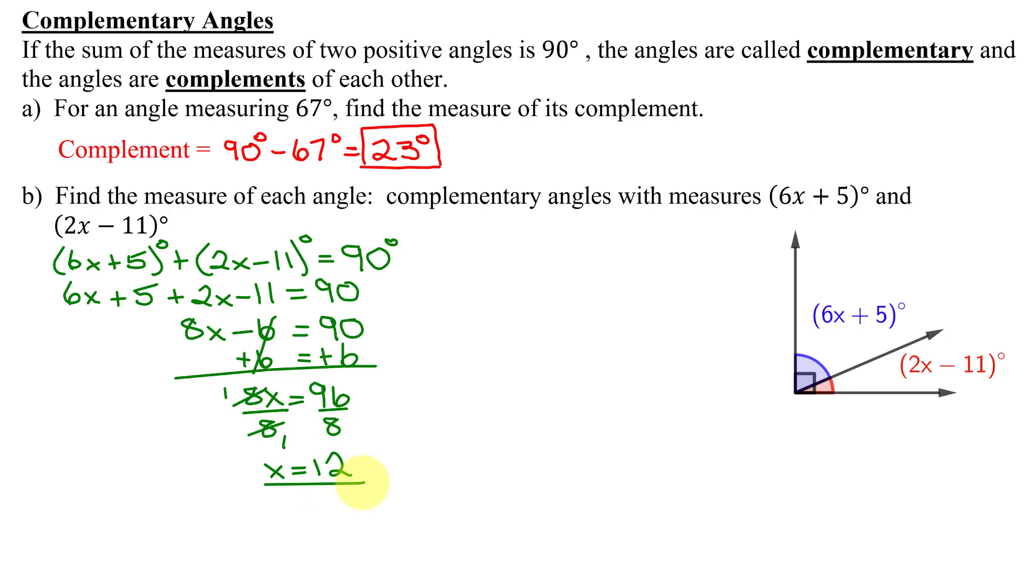So I found a value of x, but remember this problem asked me to find the measure of each angle. So I'm going to have to take my value of x and plug it into each of these expressions. So my first angle was 6x plus 5 degrees. So I'm going to get 6 times x is 12 plus 5. 6 times 12 is 72 plus 5. 72 plus 5 is 77. And remember, I'm in degrees. So 77 degrees.